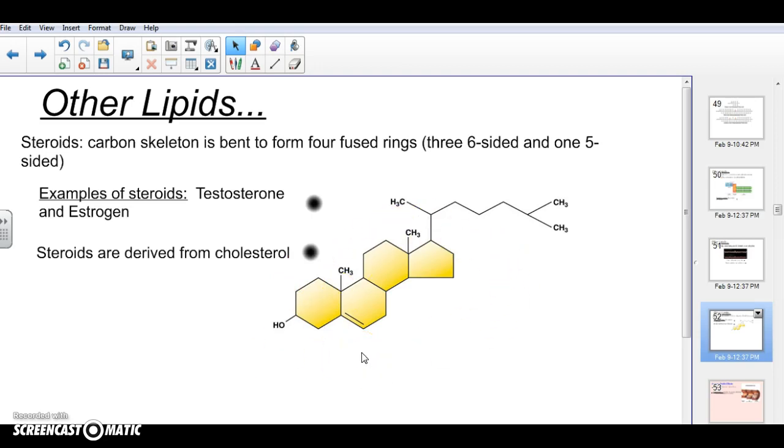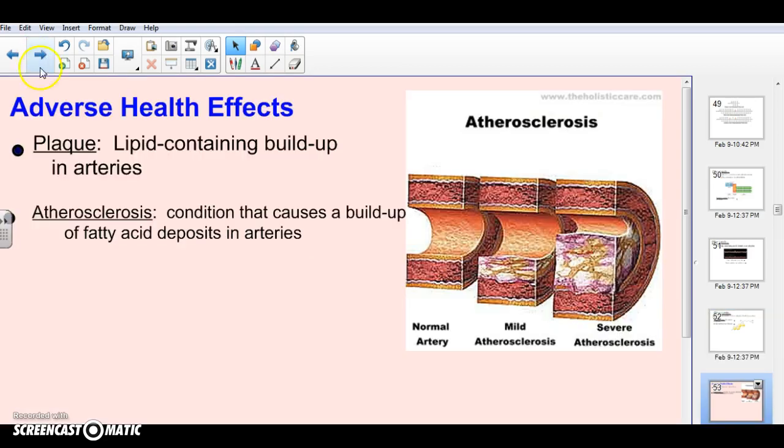When we talk about health effects and lipids, remember everything in moderation. A lot of saturated fats, if you eat an unbalanced diet, can start to build up in your arteries, and that can cause what's called atherosclerosis. Atherosclerosis, as you can see here, is a condition that builds up fatty acid deposits in arteries. This narrows the arteries and makes it harder and harder for your heart to pump blood. It could eventually cause a severe blockage, causing stroke and heart attack.